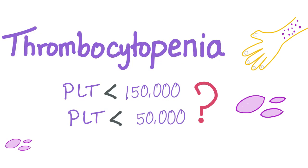Penia means decreased; cyto means cell. Thrombo means the thrombocytes or the platelets. Theoretically, thrombocytopenia is less than 150,000, but clinically, we as doctors couldn't care less about your platelet count until they go below 50,000. So, let's get started.